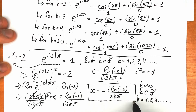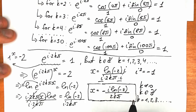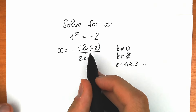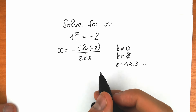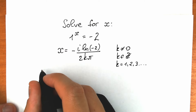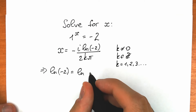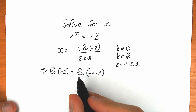We still need to simplify natural log of minus 2. In real numbers, the natural log of a negative value is not possible, but in terms of complex numbers we can find it. We rewrite it as natural log of (minus 1 times 2), which by the log product property equals natural log of minus 1 plus natural log of 2.